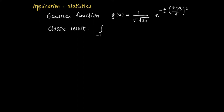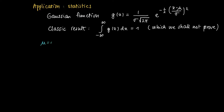The classic result is that g is actually a probability distribution, so that the integral from minus infinity to infinity of g(x) dx equals 1. Showing that this is true is more advanced and not what we're going to do here. Instead, we're going to look at the standard normal distribution, which is this function g with mu equals 0 and sigma equals 1.